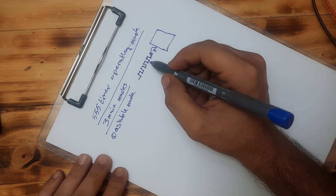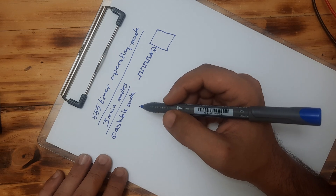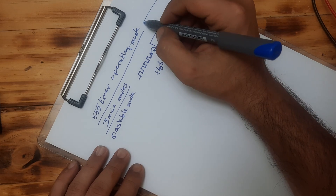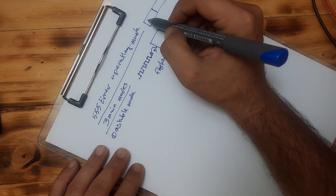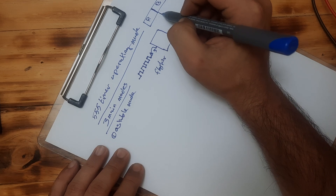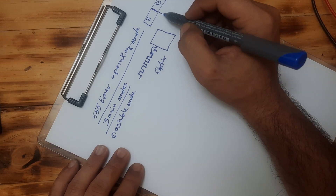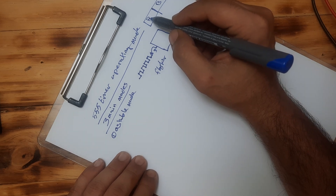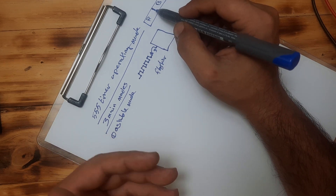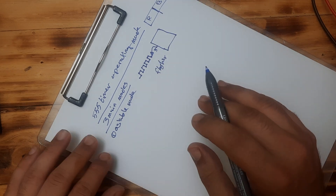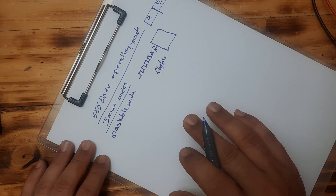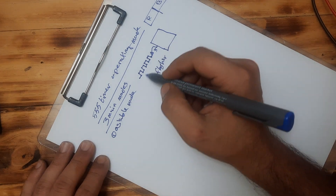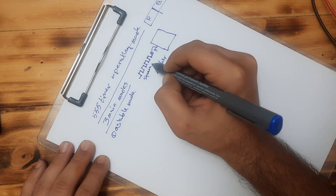This is basically what the astable mode does — continuously outputting low, high, low, high voltage forever. This would be perfect for things like a flasher circuit. For example, a police siren with red and blue lights alternating: this one turns on, that one turns off, then they swap, and so on. So astable mode continuously provides a square wave.